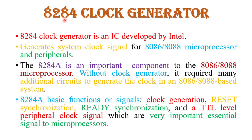Before I discuss the pin diagram, let me give a brief introduction of the 8284 clock generator. The 8284 clock generator is basically an IC developed by Intel Corporation. It generates the clock signal for the 8086 or 8088 microprocessor and other peripheral devices. It is an important component — without it, many additional circuits would be required to regenerate the clock in an 8086 or 8088 based system.